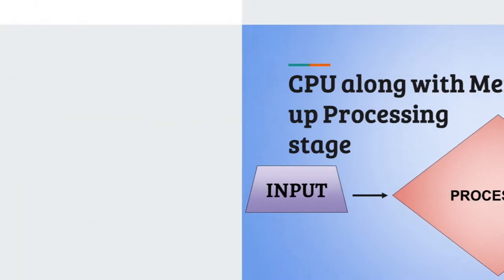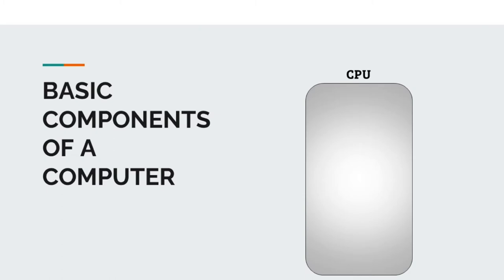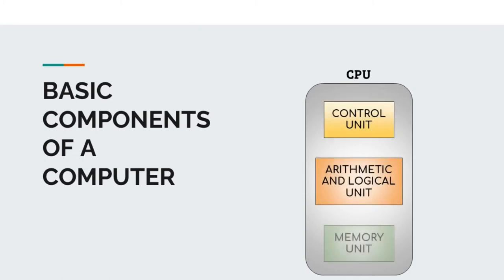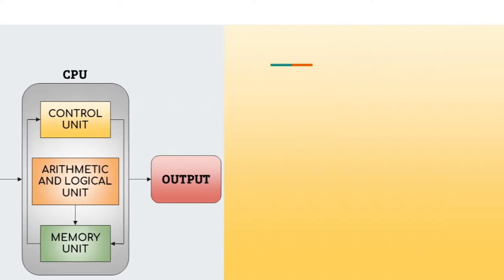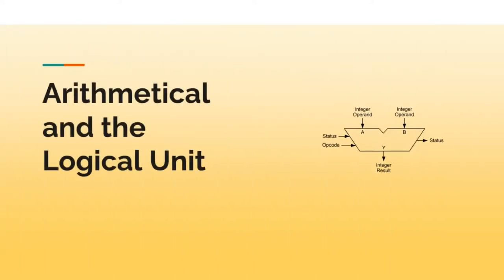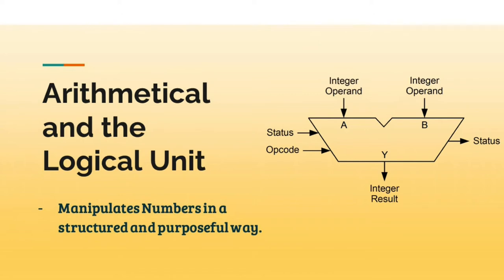Components of the processing stage look something like this. The CPU is the main component of the computer that performs calculations, actions and runs programs. It is called the brain of the computer. The CPU consists of the control unit and the arithmetical and logical unit. The ALU performs all the calculations and logical operations of the computer, manipulating numbers in a structured and purposeful way.